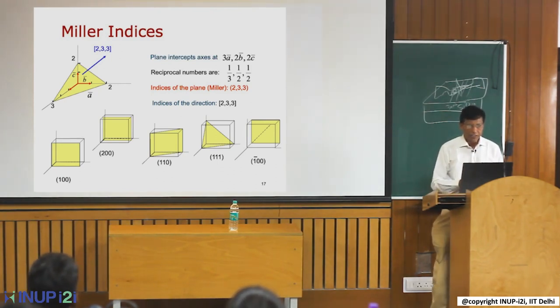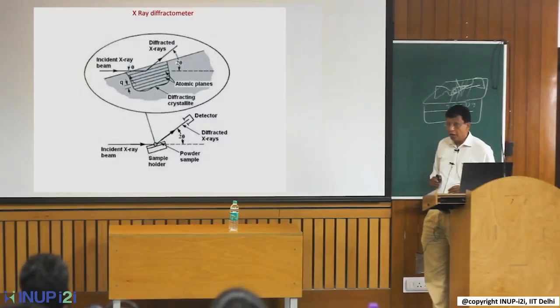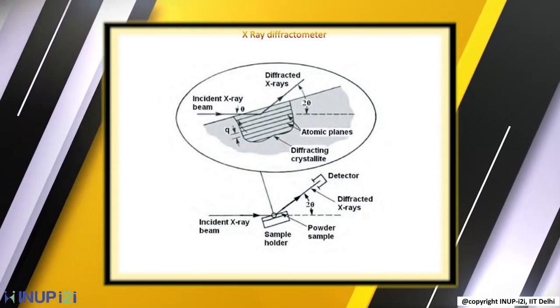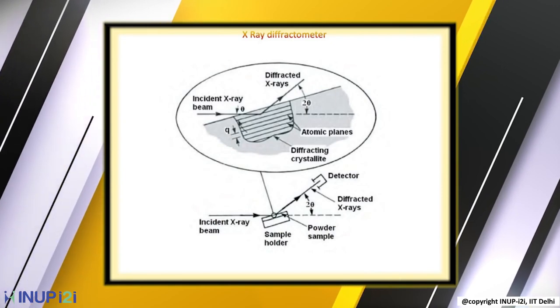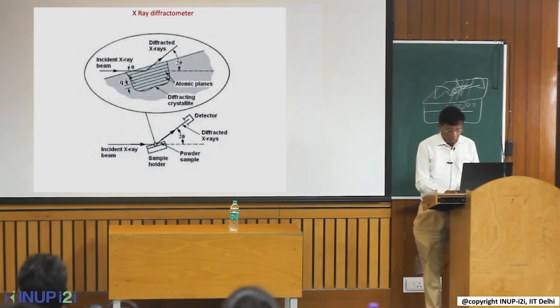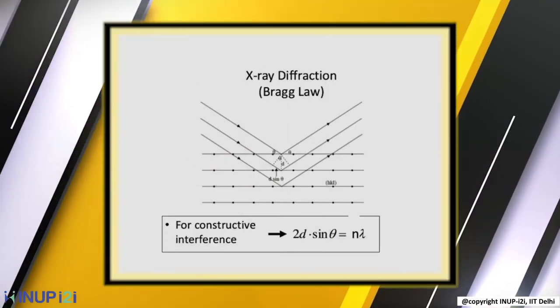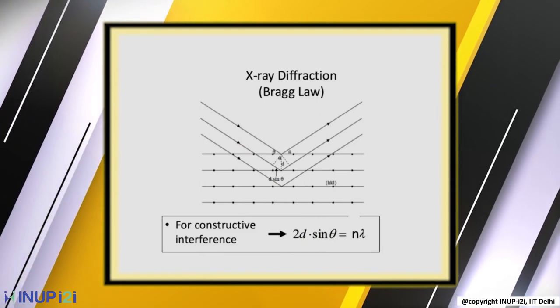In an X-ray diffractometer, you have an X-ray source, a specimen, and a detector. The sample is kept on a stage. For bulk powder samples or thin film samples, there are different mounting methods. The technique is based on Bragg's Law, where X-rays incident on crystal planes are reflected and interfere to form peaks. Here lambda is the wavelength, theta is the incident angle, and d is the spacing between planes.